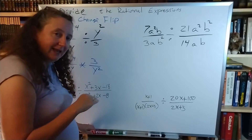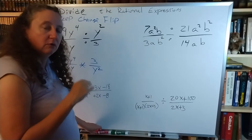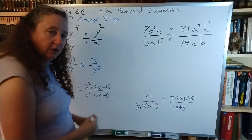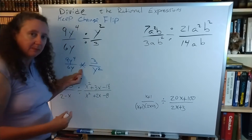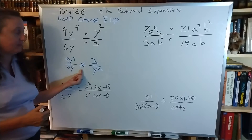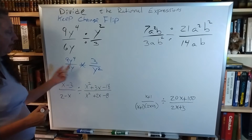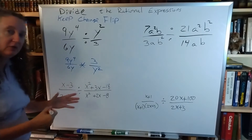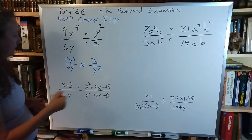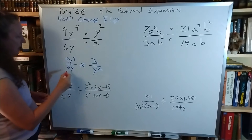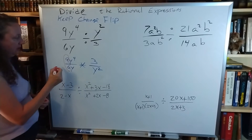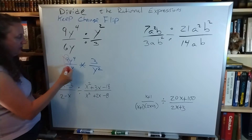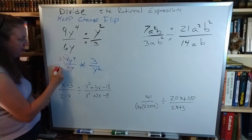You are not allowed to do any reducing until you have it in times. So now I have it in times, now I can start reducing. I see the 9 and the 6 — I'm going to cancel them out. That becomes a 3, that becomes a 2.